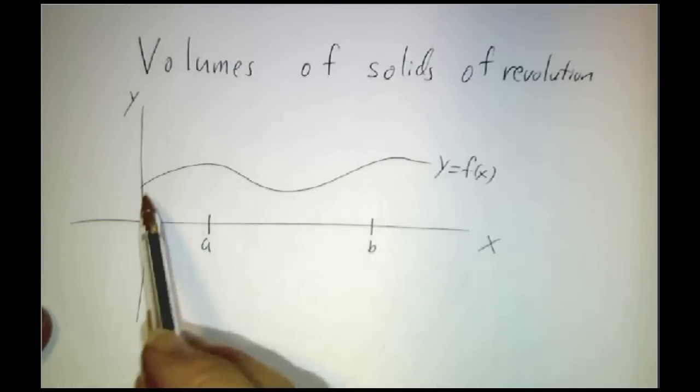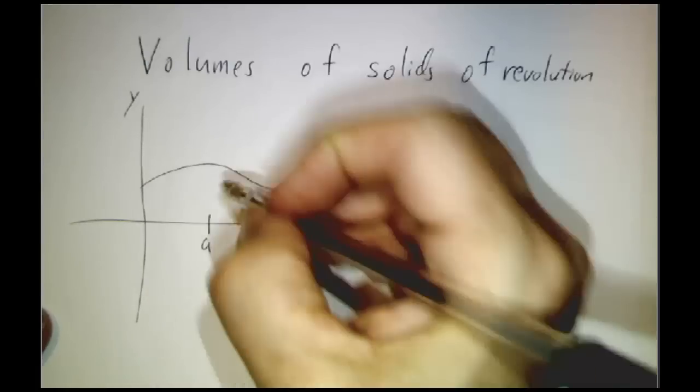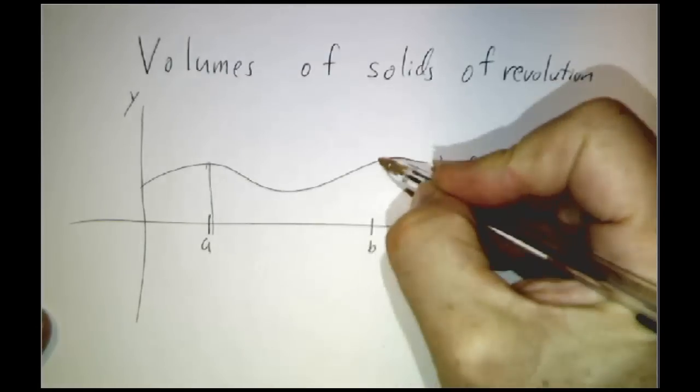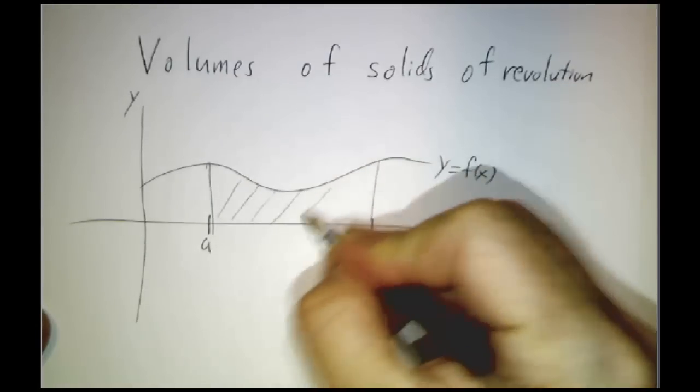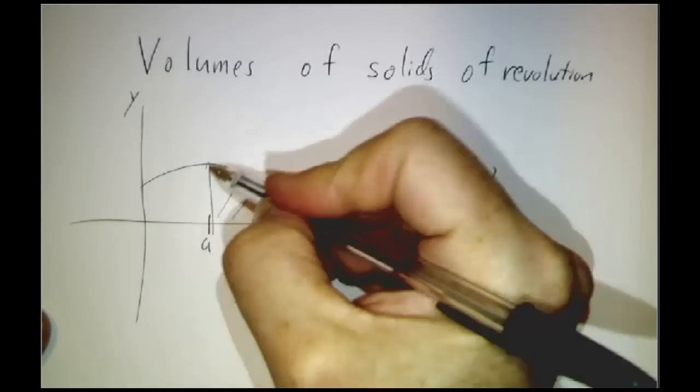A solid of revolution is what you get when you take the region underneath a curve, say this region, and you spin it around the x-axis.